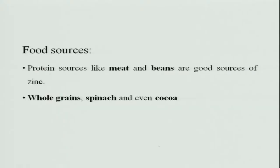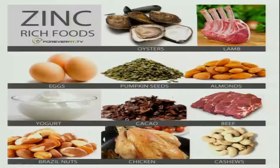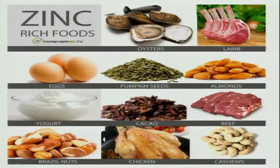Food sources of zinc include meat, beans, whole grains, spinach, and cocoa. Other rich sources include cashews, eggs, yogurt, lamb, oysters, pumpkin seeds, and almonds.